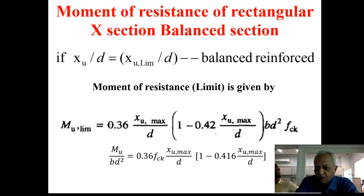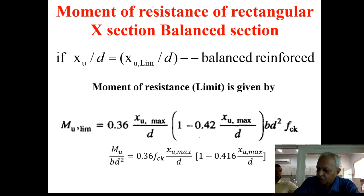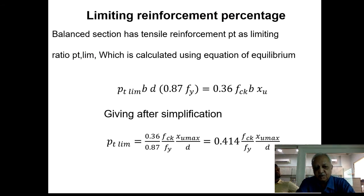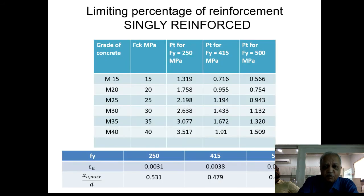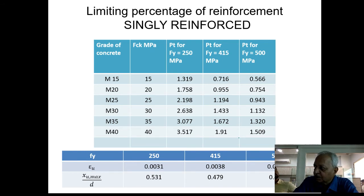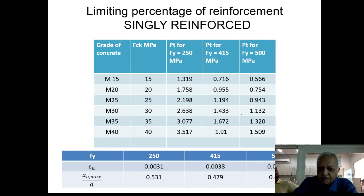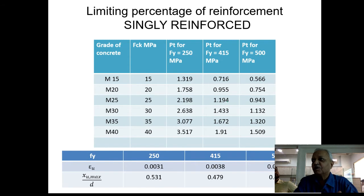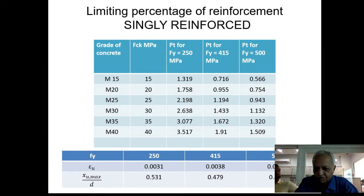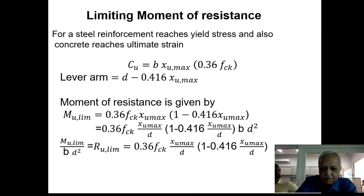For a balanced section, similar terms apply using the limiting XU (maximum neutral axis depth). For singly reinforced sections of different steel grades, the limiting percentage of steel for the balanced section can be worked out. It is rare to encounter a perfectly balanced section in practice, since different loading combinations may make a section under-reinforced for some loads and over-reinforced for others.